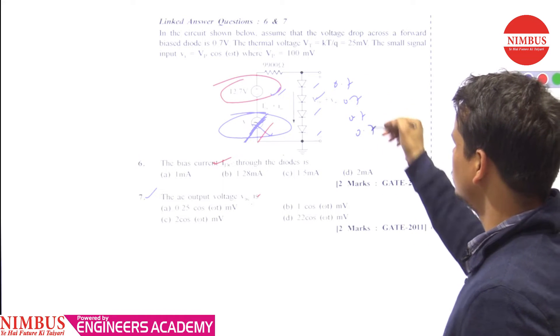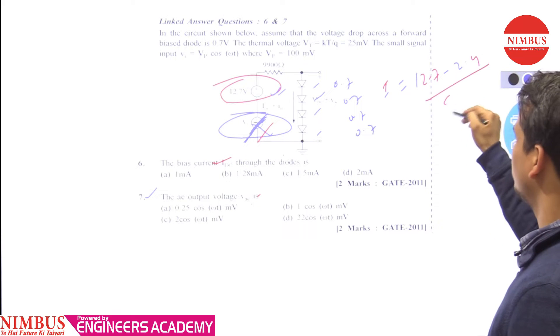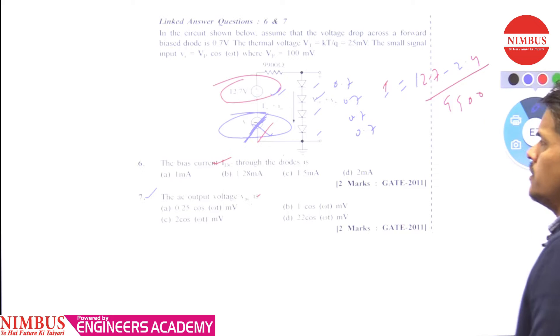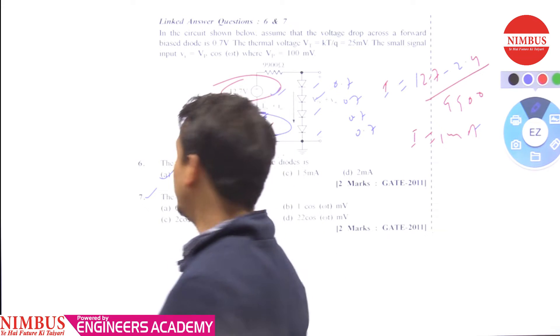The total voltage drop will be 2.8V. The current Ic equals 12.7 minus 2.8 divided by 9.9kΩ, which gives us 1mA. Therefore, option A is correct for the DC current.